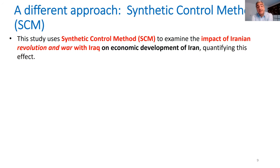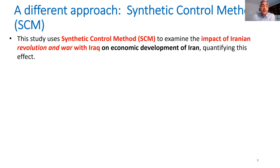We use the synthetic control method, which is by now an established methodology to find the causal impact of exogenous shocks. It has been applied across different research questions and disciplines. Here we apply this method to identify the causal effect of this political change and turmoil on one important economic indicator, namely income per capita, which is understandable for all of us and is one of the most important indicators for economic development.